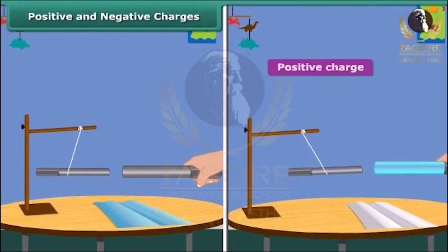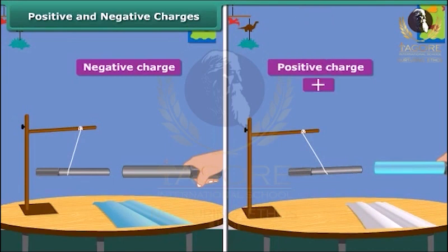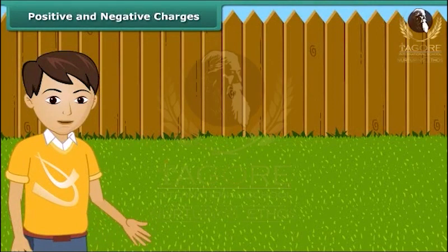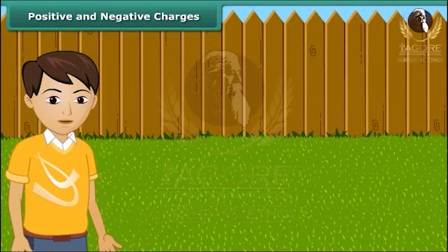These two kinds of charges are called positive and negative charges. The positive charge is shown by the plus sign and the negative charge by the minus sign. The charge on a glass rod rubbed with silk is taken as positive and that of ebonite rod rubbed with woolen cloth is taken as negative. From the earlier activity we can conclude that like charges repel each other and unlike charges attract each other.